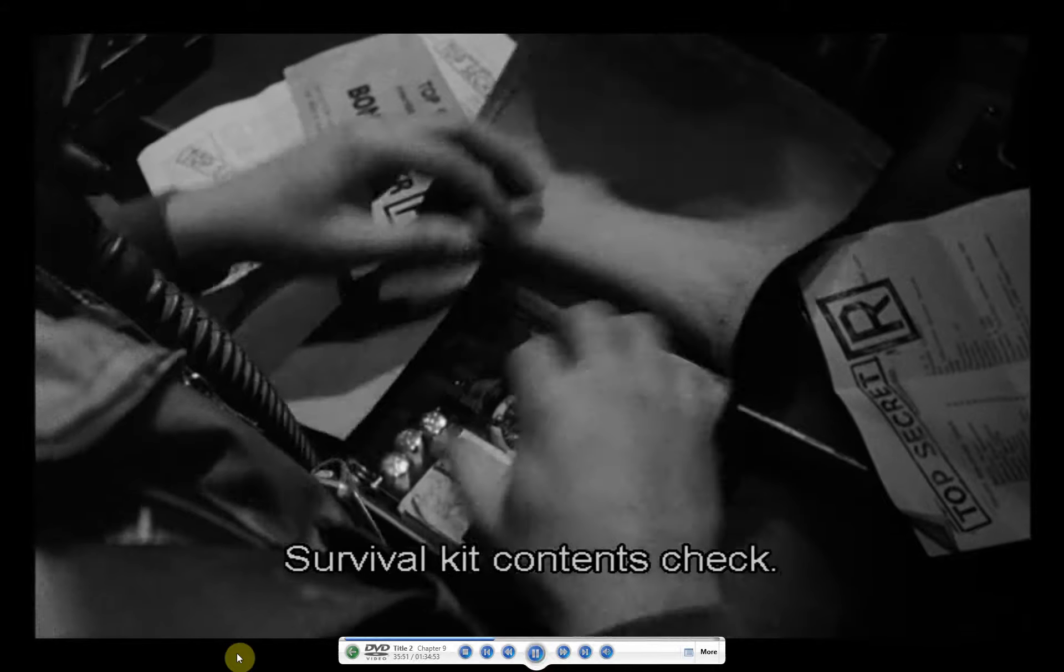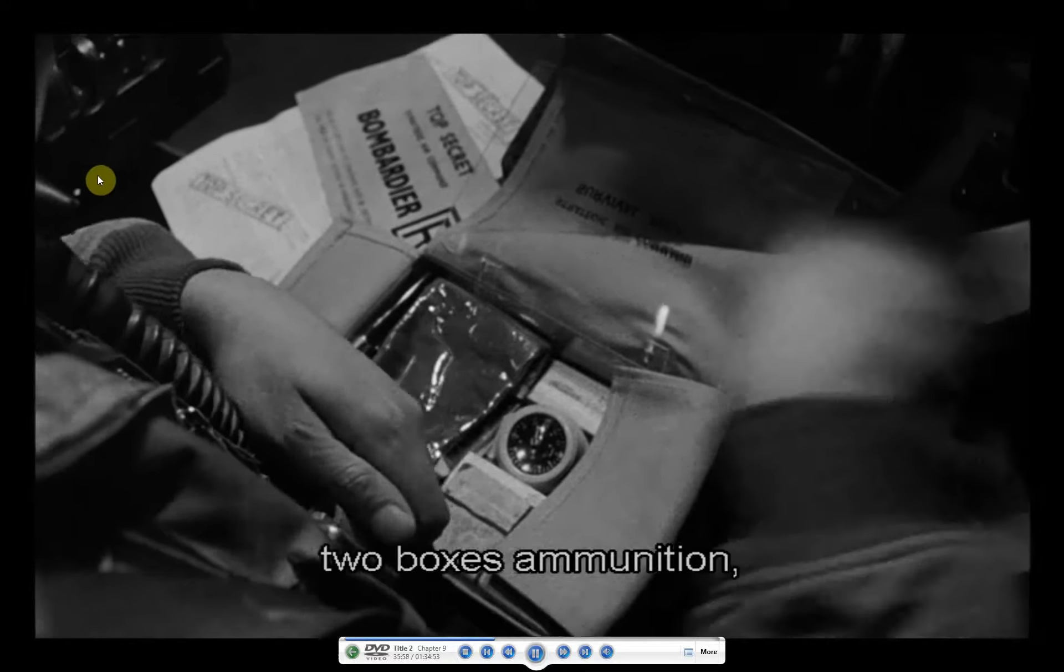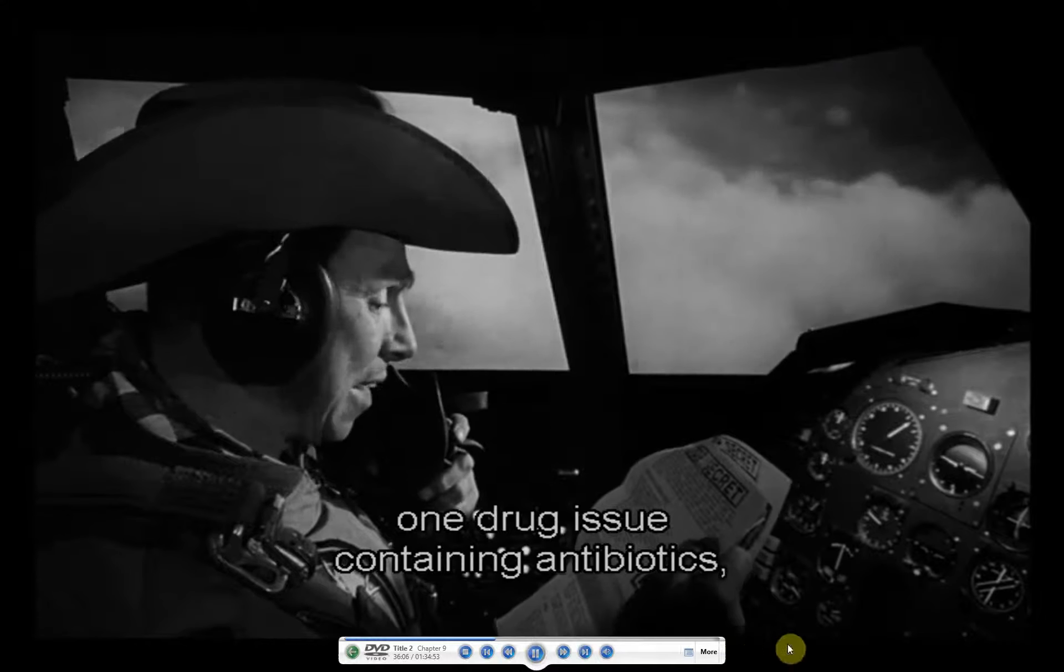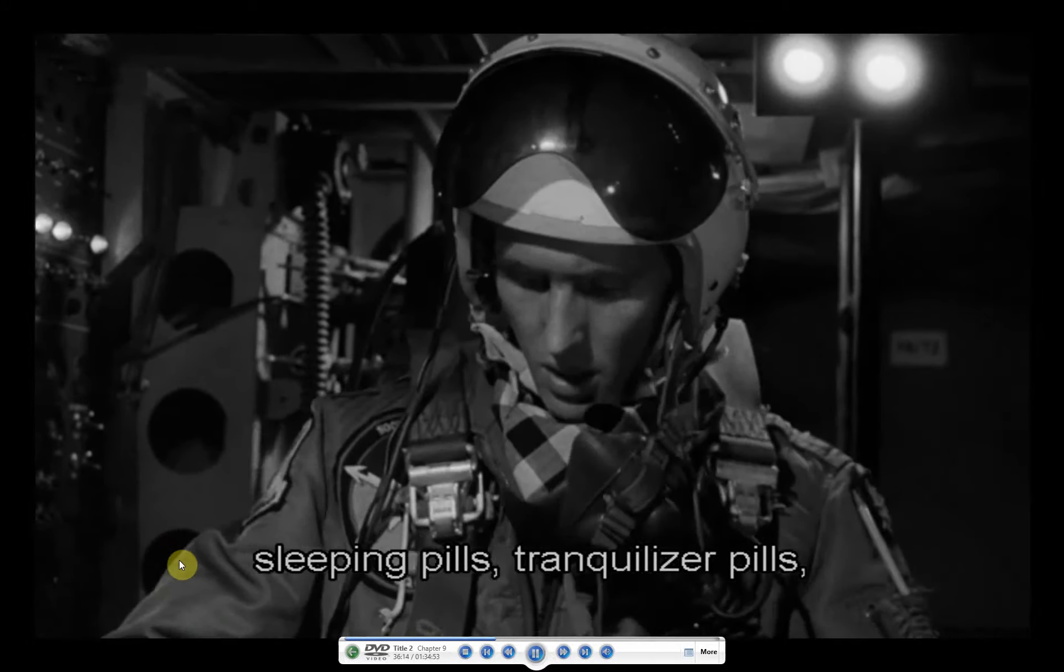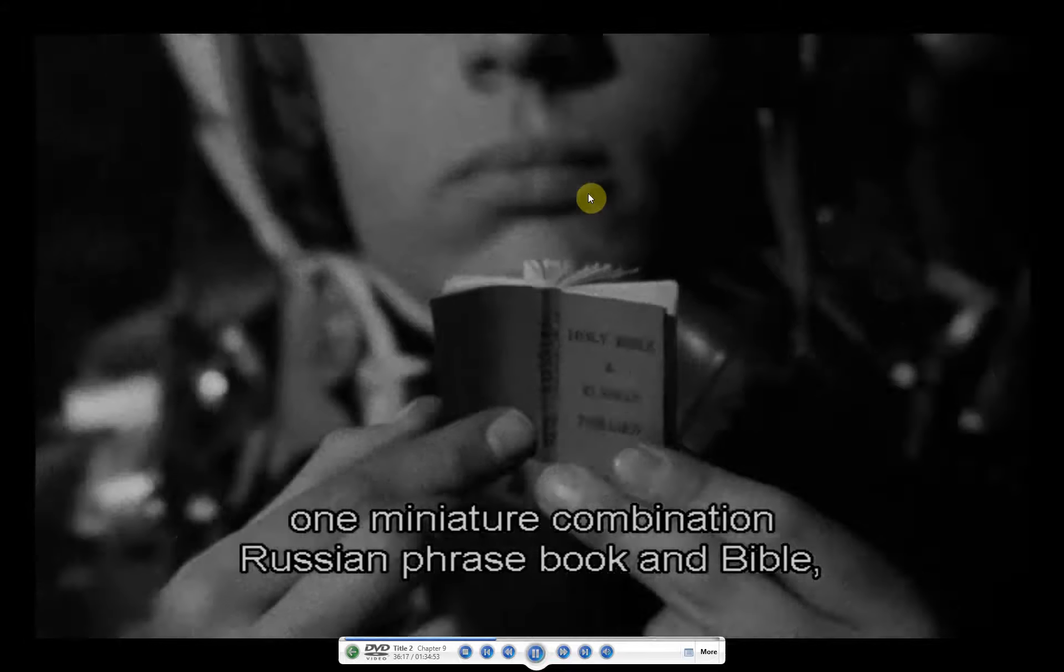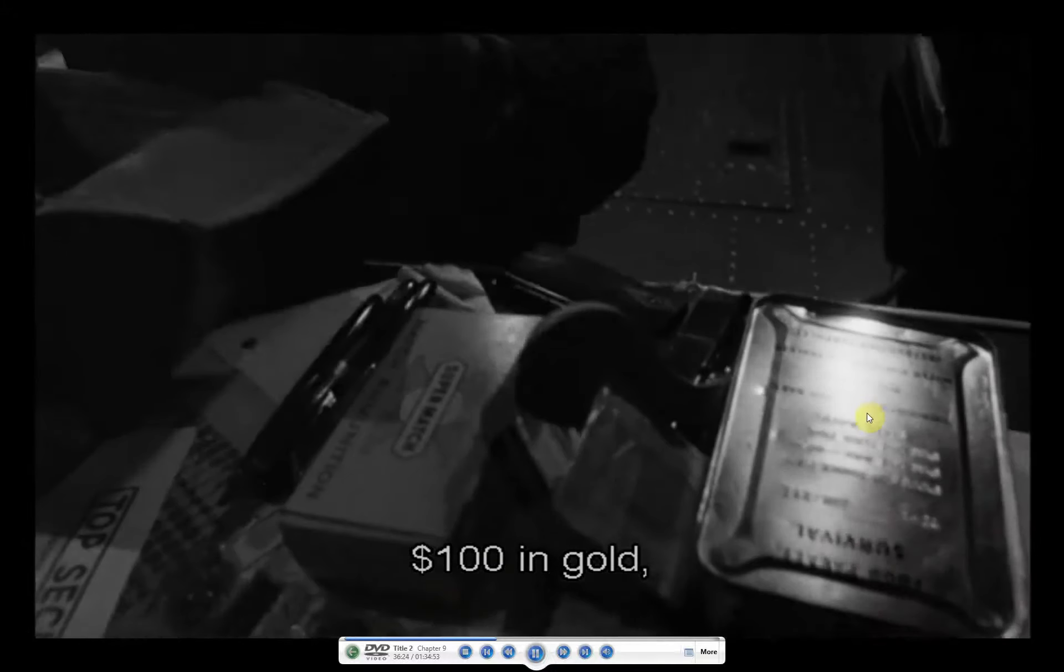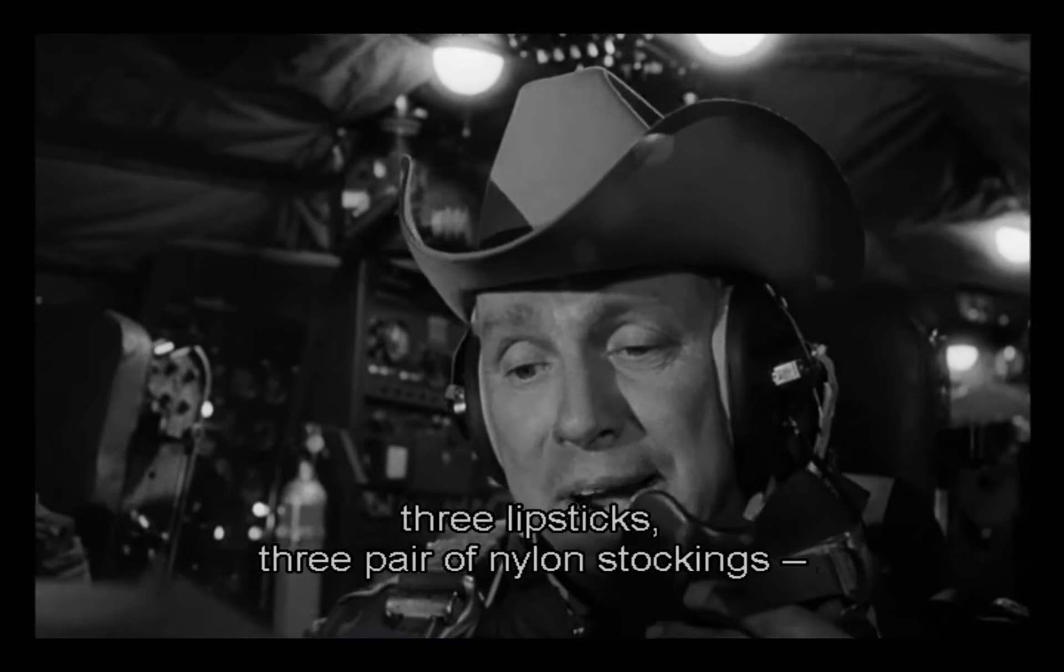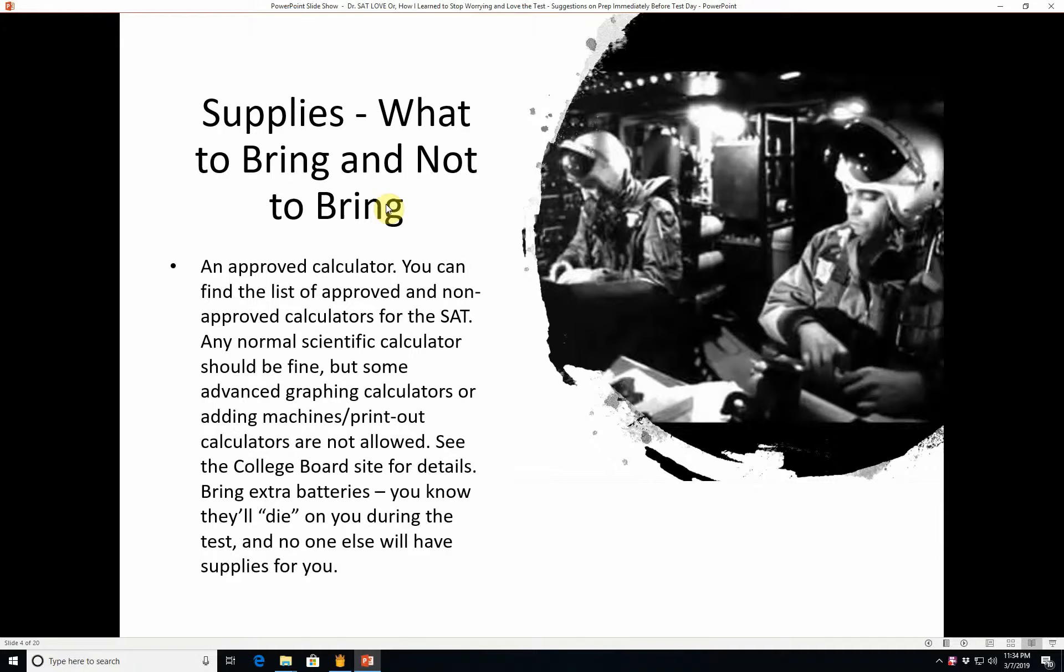Survival kit contents check. In them, you will find one .45 caliber automatic, two boxes of ammunition, four days concentrated emergency ration, one drug issue containing antibiotics, morphine, vitamin pills, pep pills, sleeping pills, tranquilizer pills, one miniature combination Russian phrase book and Bible, $100 in rubles, $100 in gold, nine packs of chewing gum, one issue of prophylactics, three lipsticks, three pair of nylon stockings. Shoot, a fella could have a pretty good weekend in Vegas with all that stuff. So, you won't need any of those supplies they've just listed, but you will need an approved calculator.